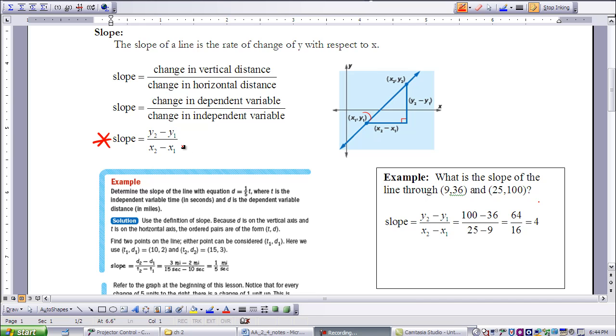I have a little example over here that I just want to walk through with you. What is the slope of a line through 9, 36, and 25, 100?